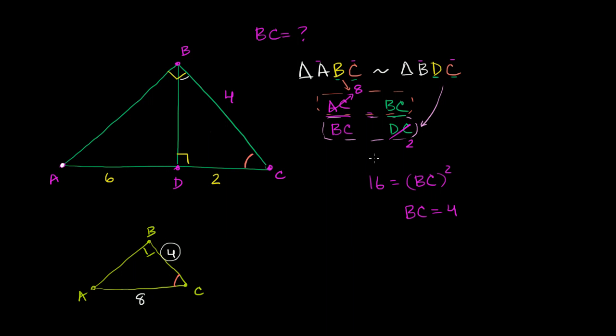Then if we wanted to draw BDC, we would draw it like this. So BDC looks like this. So this is BDC. See, that's a little bit easier to visualize, because this is our right angle. This is our orange angle. And this is 4. And this right over here is 2.